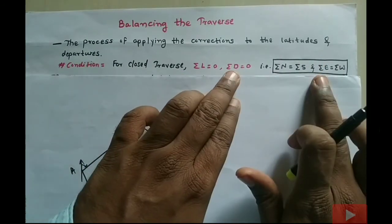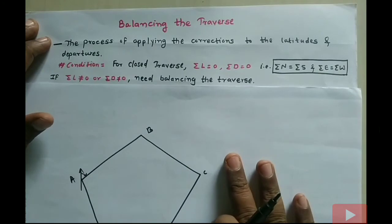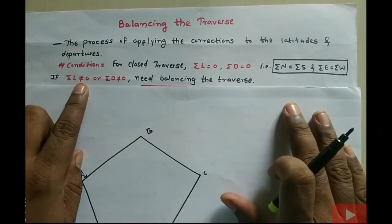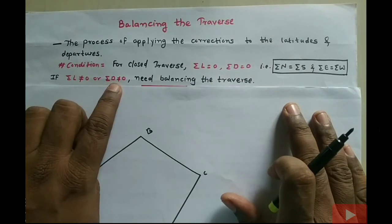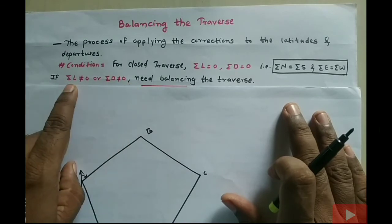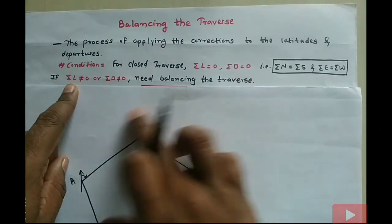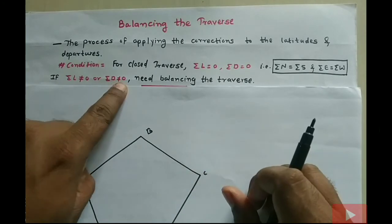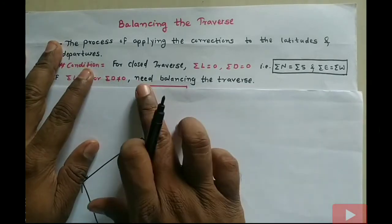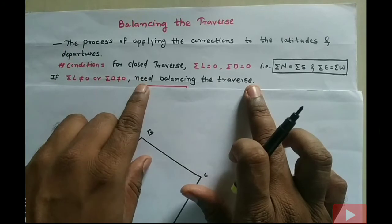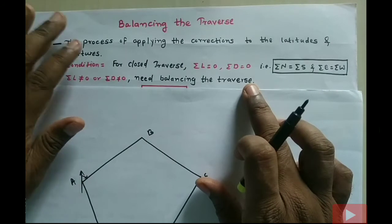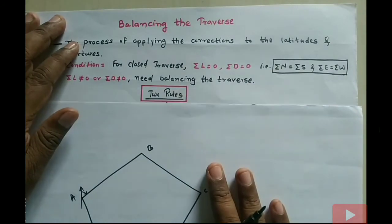But what happens if summation of latitudes is not equal to zero, or summation of departures is not equal to zero? If the summation of latitudes and departures of all lines does not become zero, then we need to balance the traverse. So we need to balance the traverse in that case.